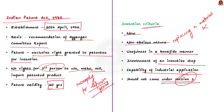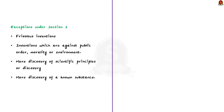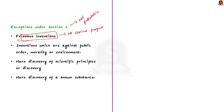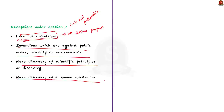Section 3 deals with exceptions — some subject matters which are not patentable include: frivolous inventions that do not have a serious purpose (for example, there was a patent filed in the US for an apparatus for facilitating the birth of a child by centrifugal force — a machine that spins a woman around until she gives birth — that is a frivolous invention); inventions which are against public order, morality, or harmful to the environment; mere discovery of scientific principles; and mere discovery of a known substance — these are also non-patentable.